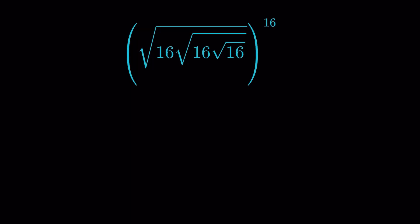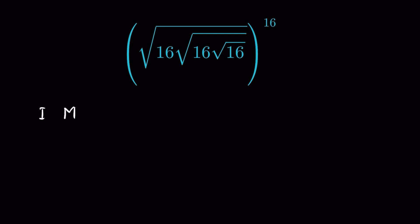So how do we solve this? These are called nested radicals. Let's solve it using multiple methods. For the first method, we will use the concept that the square root of a equals a raised to the power of 1/2.